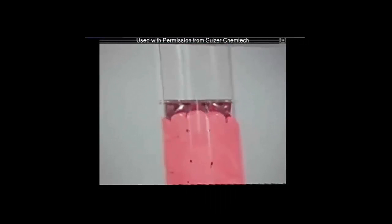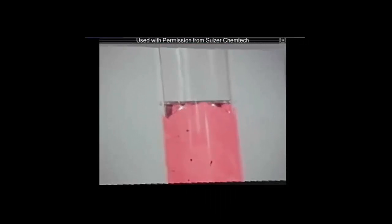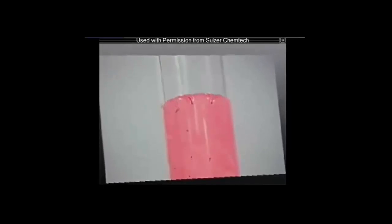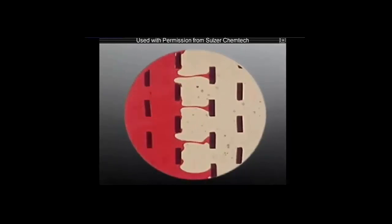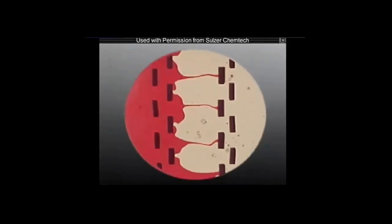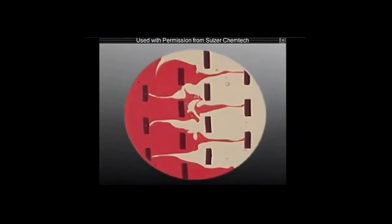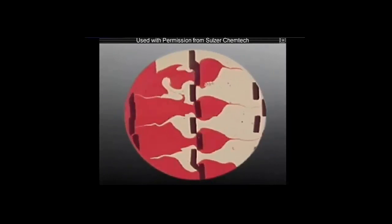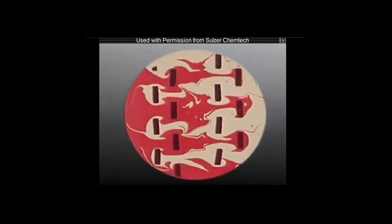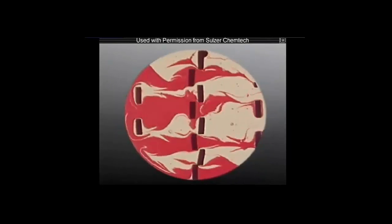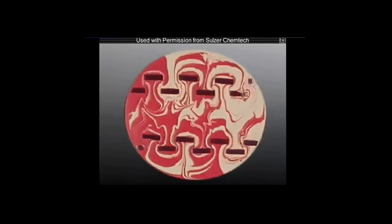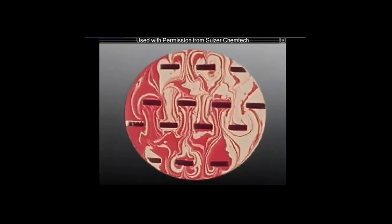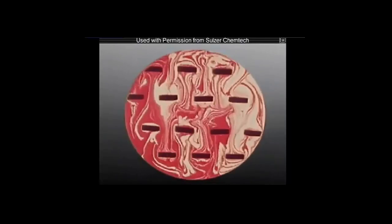If the resins are left to harden, we can look at the successive cross-sections of the mixer to see how the flow field mixes these high viscosity fluids. Immediately after the mixer inlet, the radial flow produced by the mixer elements can be clearly seen.